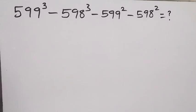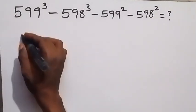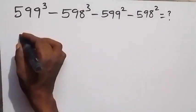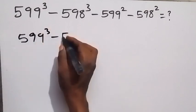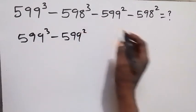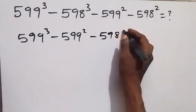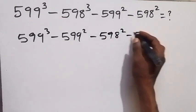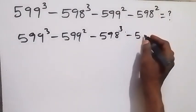Hello, you are welcome. How to solve this nice Olympiad problem — we want to simplify this. First, let's bring 5^99 together, and from here we have 5^99 squared, then minus 5^99. Let's bring 5^98 together; we have minus 5^98 squared, then minus 5^98.